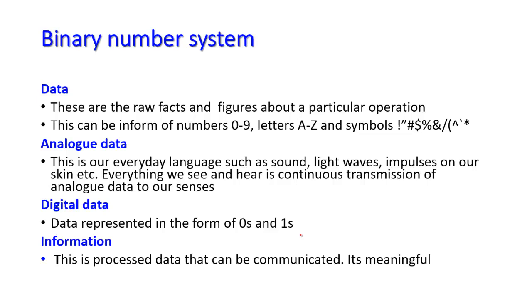Then we also have what we call analog data. Analog data is our everyday language such as sound, light waves, impulses on our skin, etc. We're talking about anything you can hear, anything you can feel — that is what we call continuous transmission of data to our senses. For example, if somebody is calling me, that is analog data communicating with my brain through the voice I'm receiving. So analog data is whatever we talk, whatever we listen, whatever we hear, whatever we see. Computers don't use analog data — they don't understand anything.